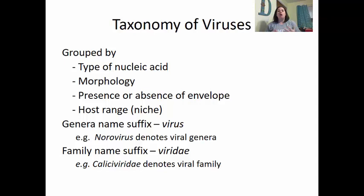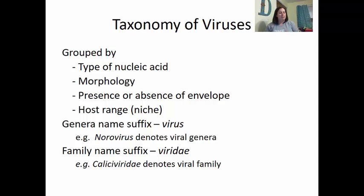Viruses are grouped by their type of nucleic acid — whether they're a DNA virus or an RNA virus. They're also classified by their morphology: are they helical, polyhedral, or enveloped? And also their host range — who can they infect? Most viruses are very specific about who they will infect. As an example, the genre name suffix would be something like norovirus, and the family name suffix is viridae, such as caliciviridae.